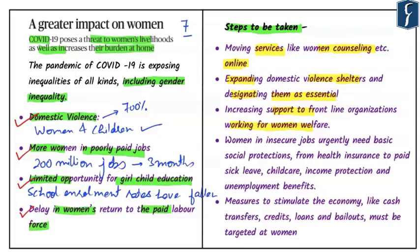We need to fight against the stigma of pink collar jobs. Women require secure jobs and all kinds of protection normally available in the organized sector. Basic social protection — including health insurance, paid sick leaves, child care, income protection, and unemployment benefits — should also be extended to women. Measures to stimulate the economy through cash transfers, credits, loans, and bailouts must be targeted at women.